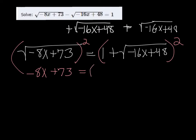However, the right side needs to be foiled. So because we're going to get, we're going to get 1 plus the square root of negative 16x plus 48 times 1 plus the square root of negative 16x plus 48.